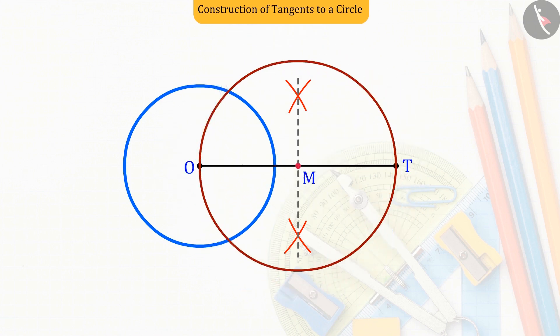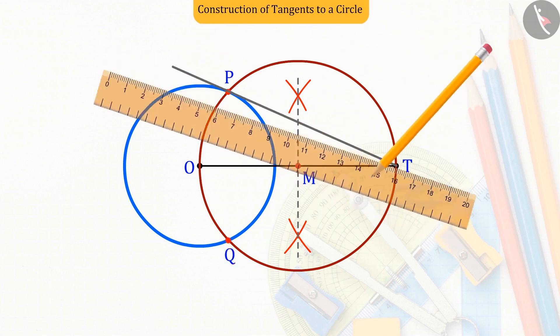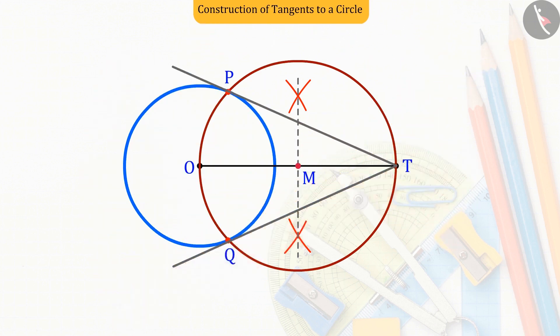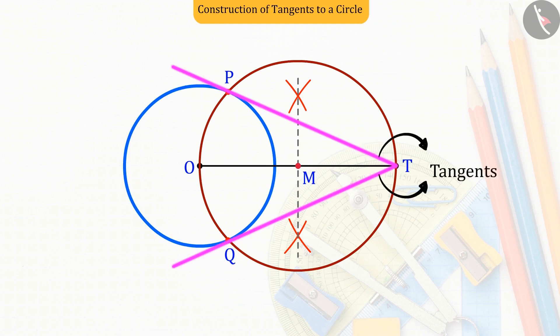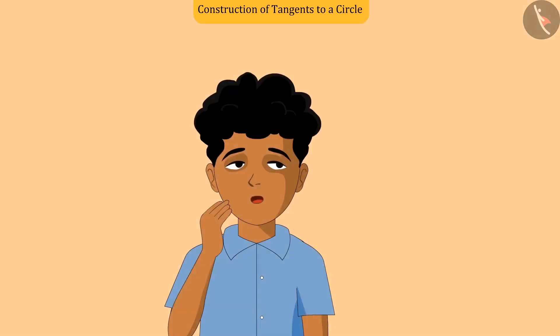Which intersects the given circle at point P and Q. Now we will find out, using the properties of tangents, whether the two lines PT and QT are tangents to the circle. Let us see how.